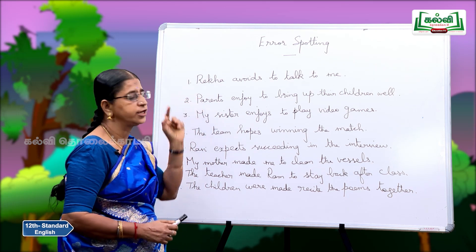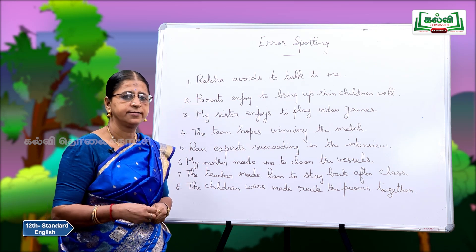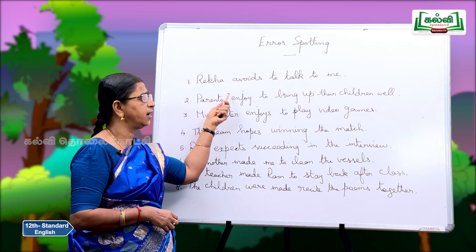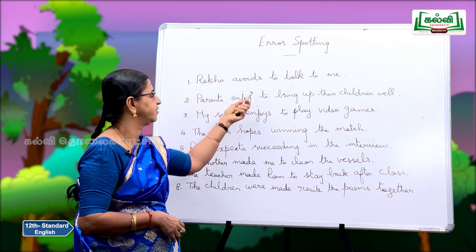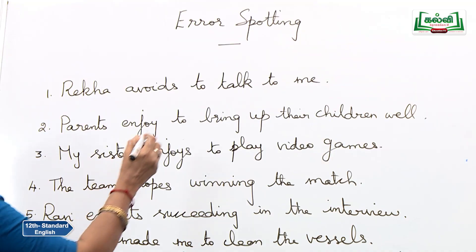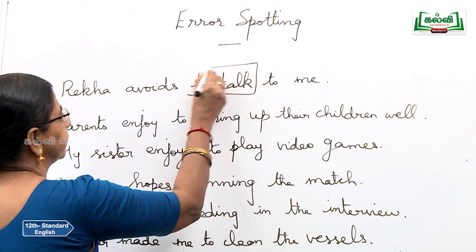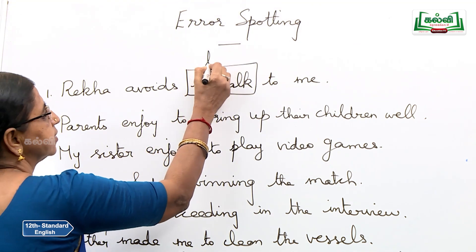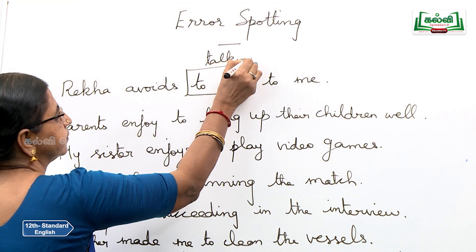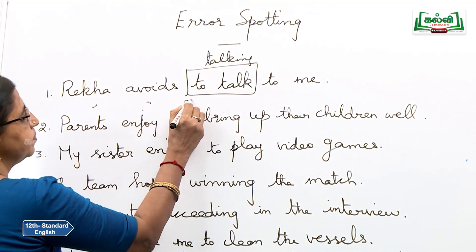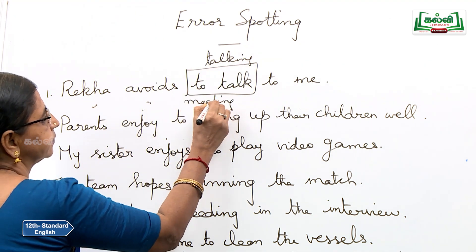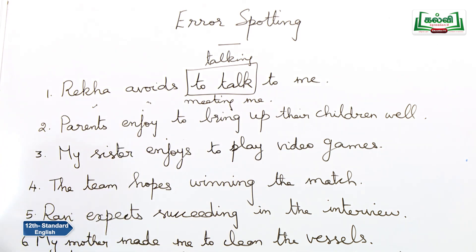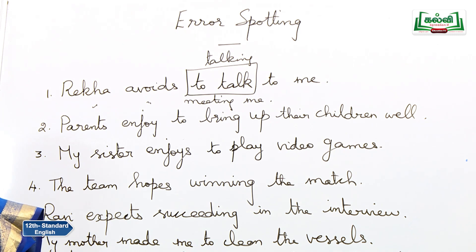Rekha avoids to talk to me. What is the mistake here? Rekha avoids to talk — this part is wrong. The infinitive has to be changed to the gerund form. Rekha avoids talking to me. Rekha avoids meeting me. Rekha avoids discussing things with me. So it should always be the -ing form.